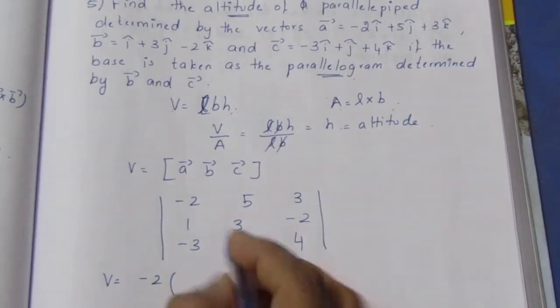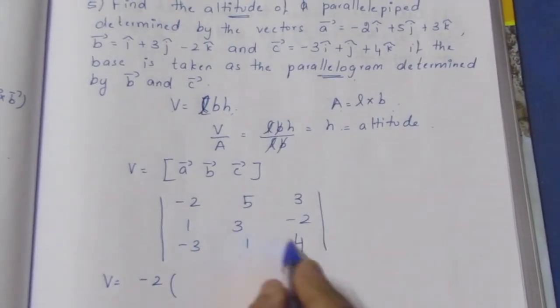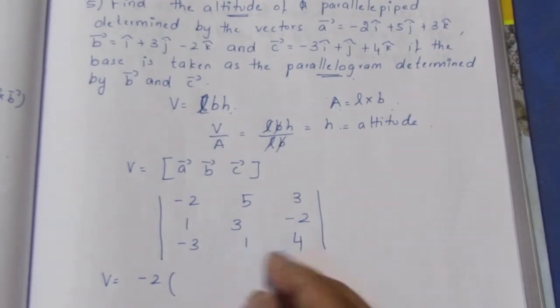We'll expand along the first row. Multiply each element by its cofactor.